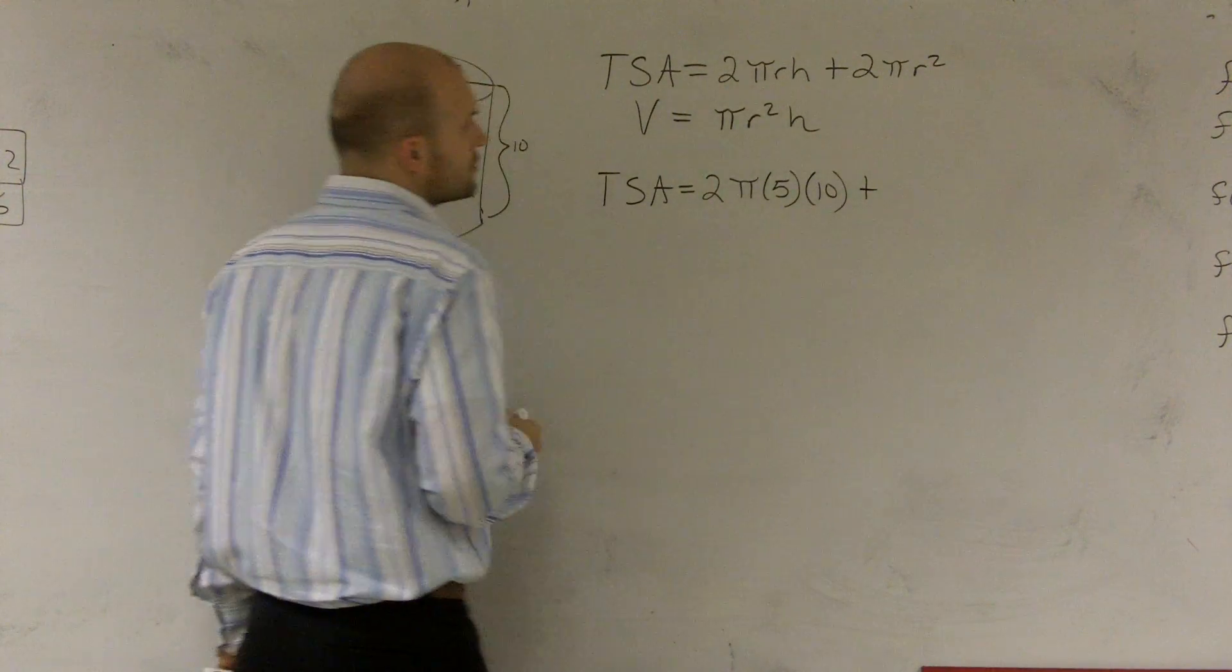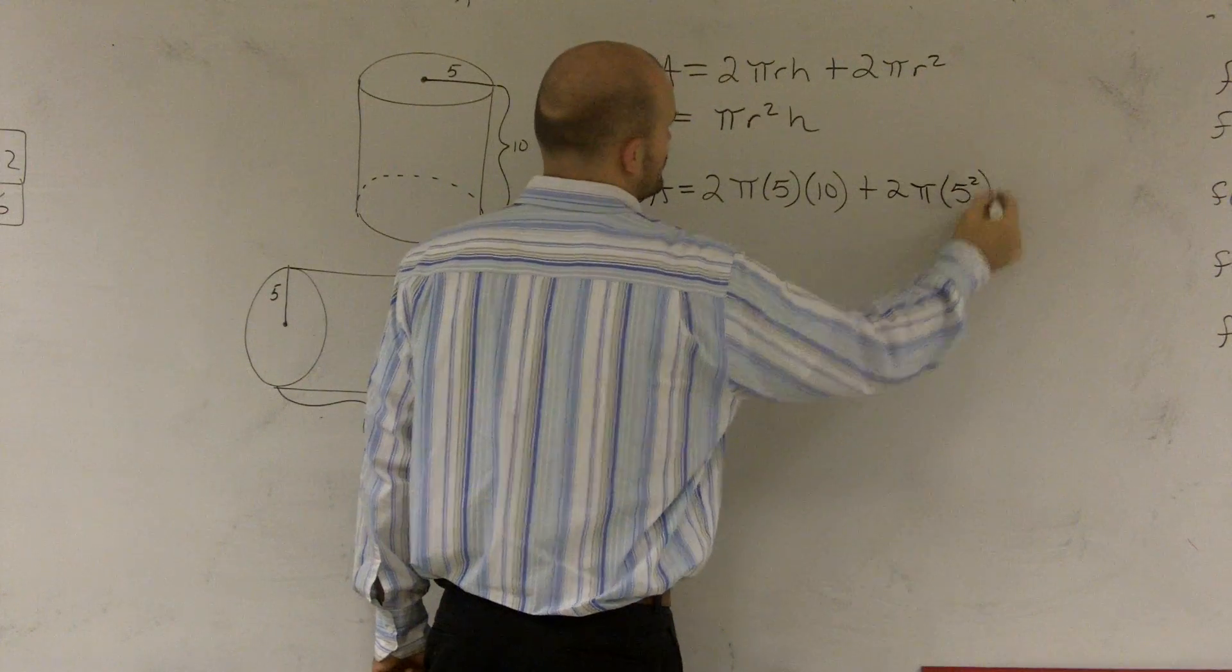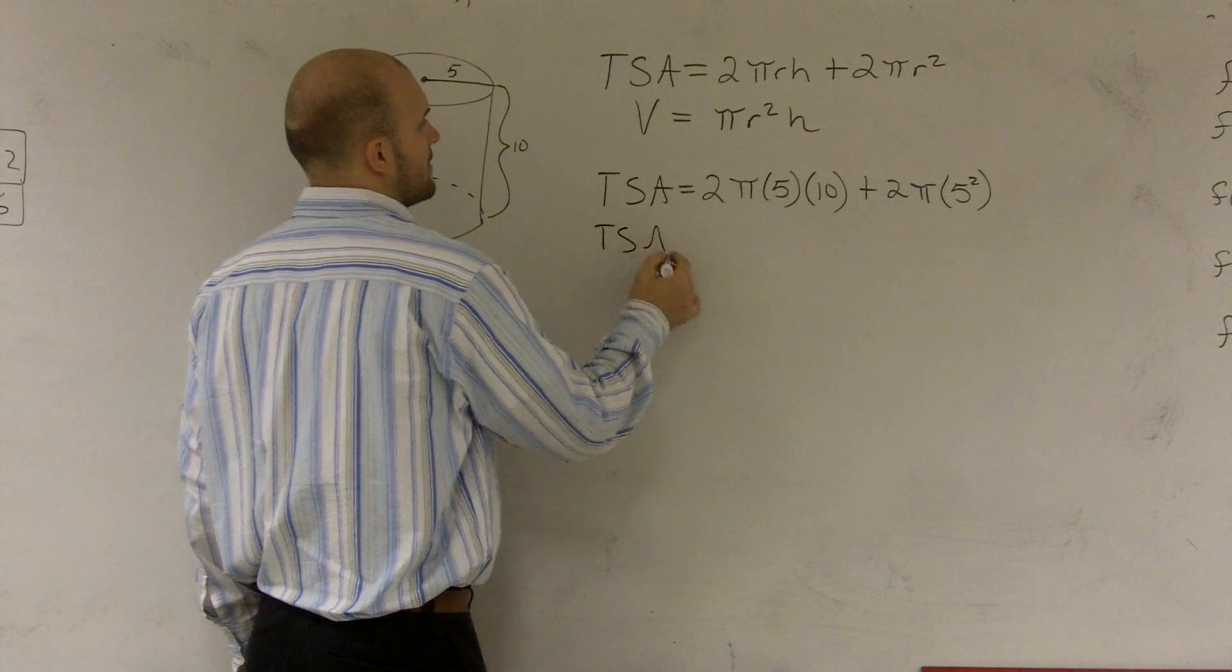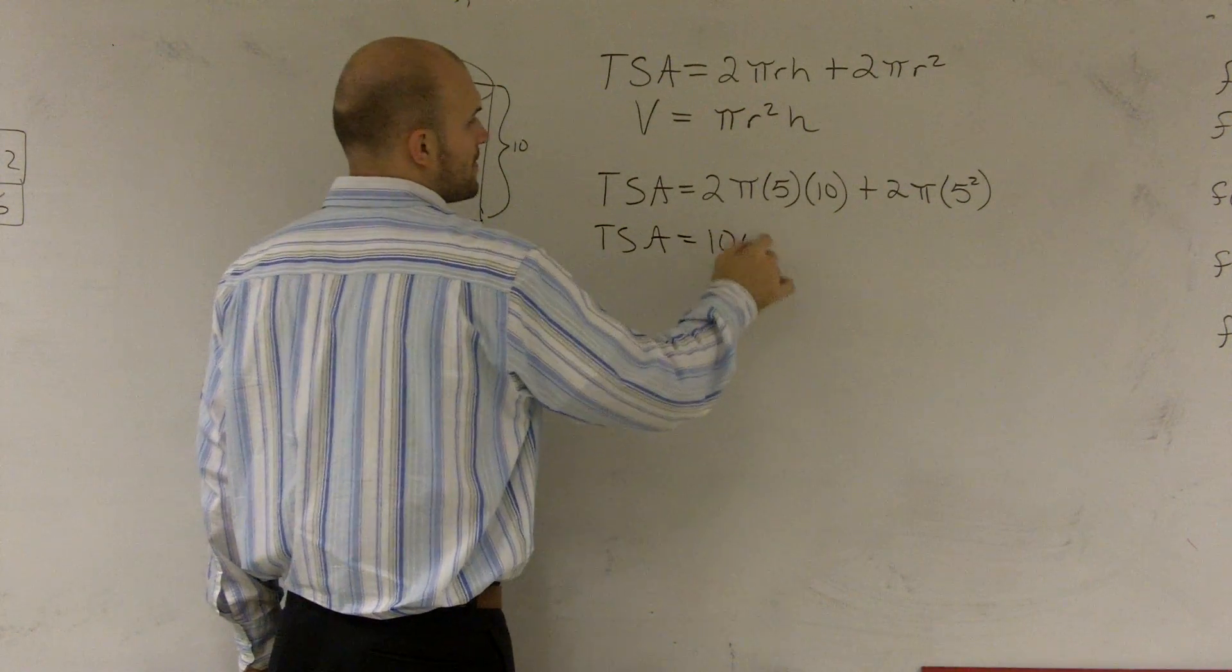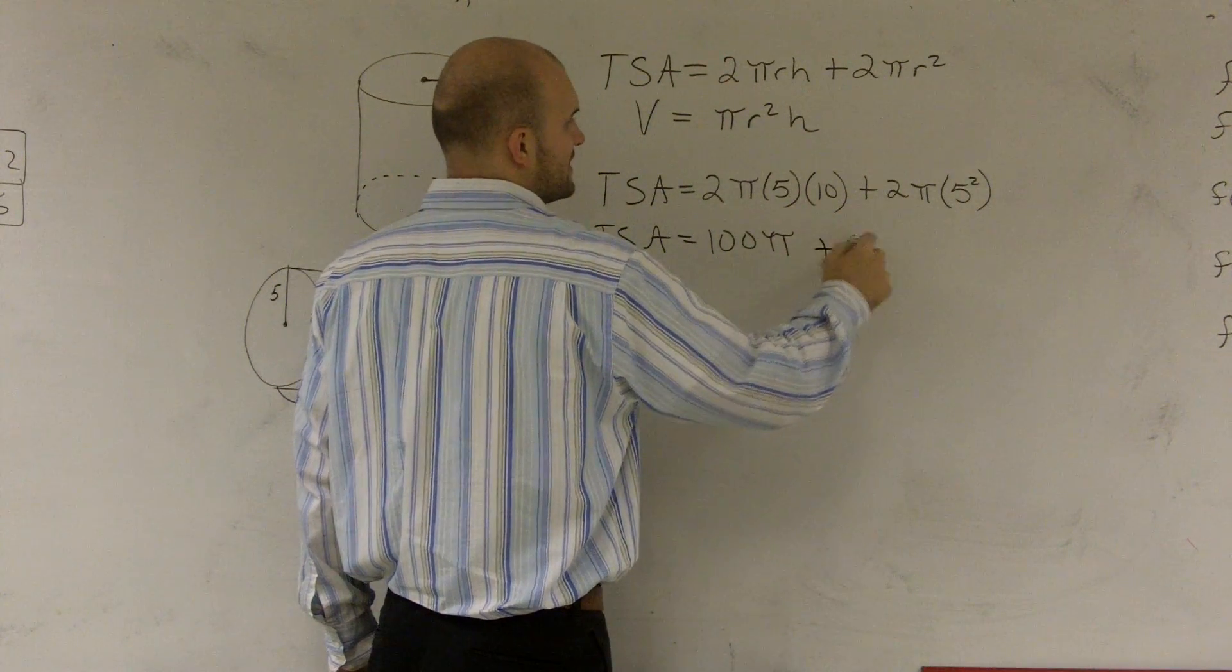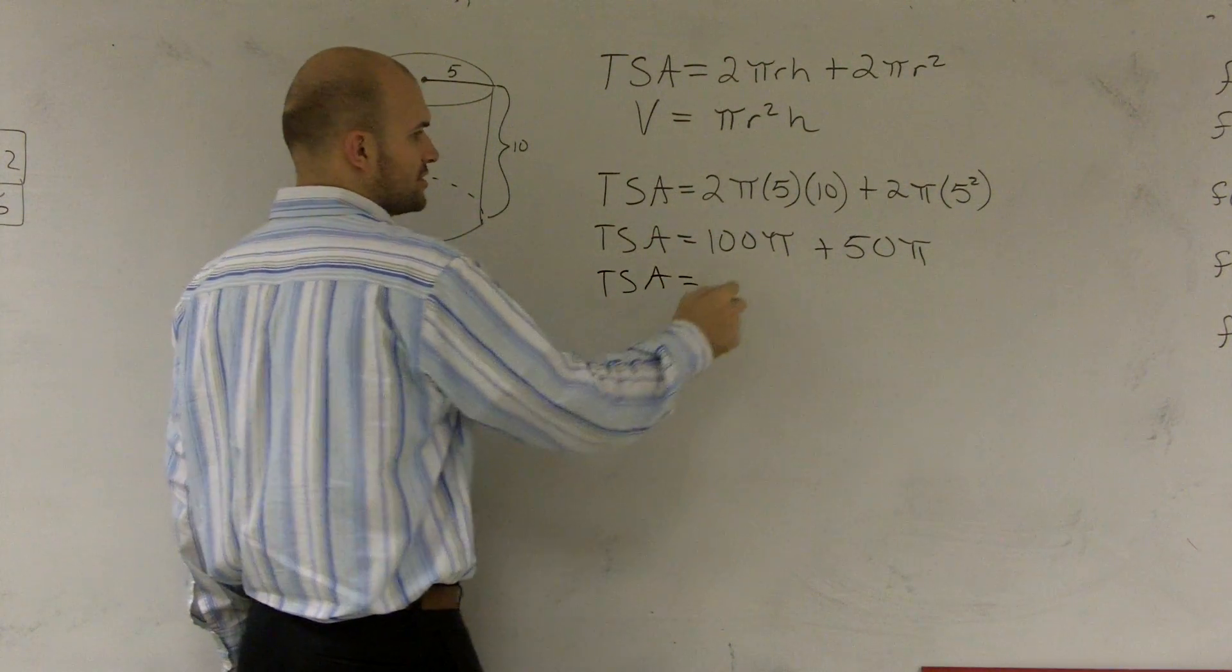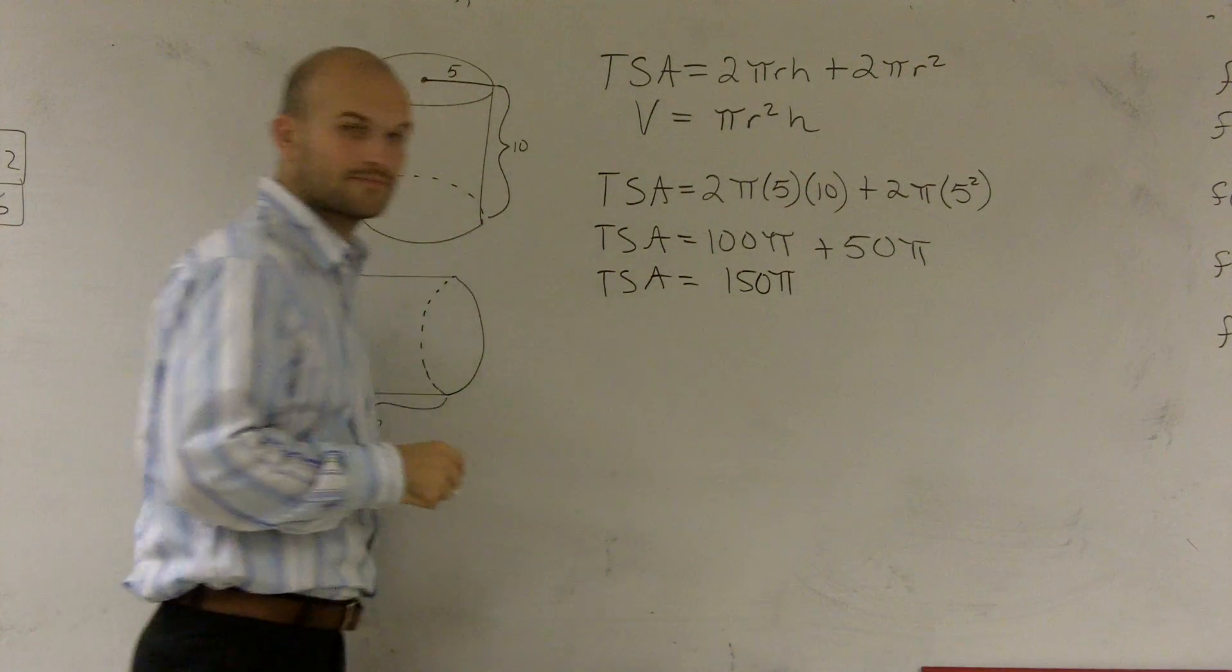Then I'll have plus 2 times pi times my radius squared. All right, so now I can just do a little math. 5 times 10 is 50, times 2 is 100. And that'd be 25 times 2 is 50 pi. Now I can combine these like terms. So my total surface area for this cylinder is 150 pi.